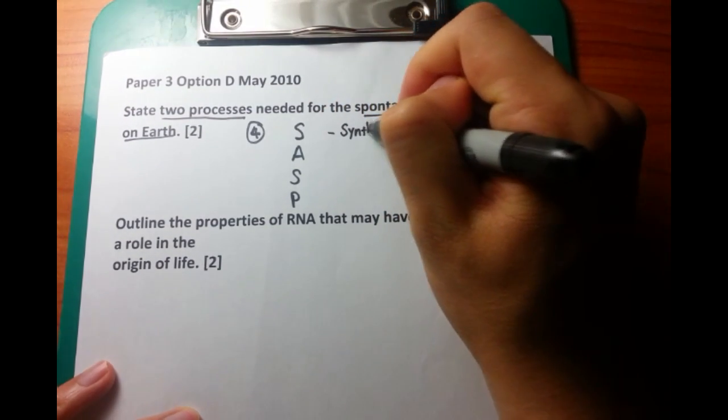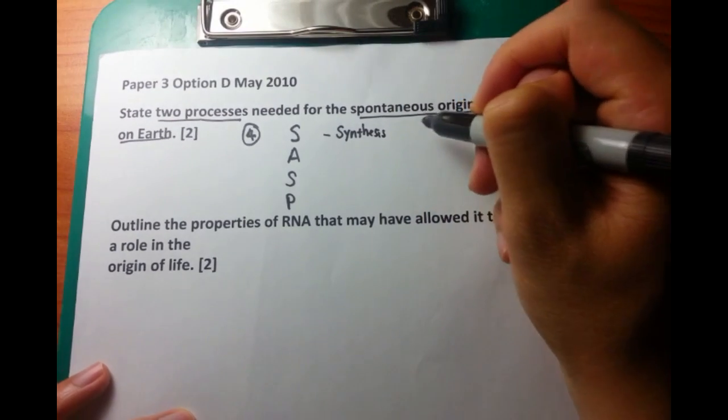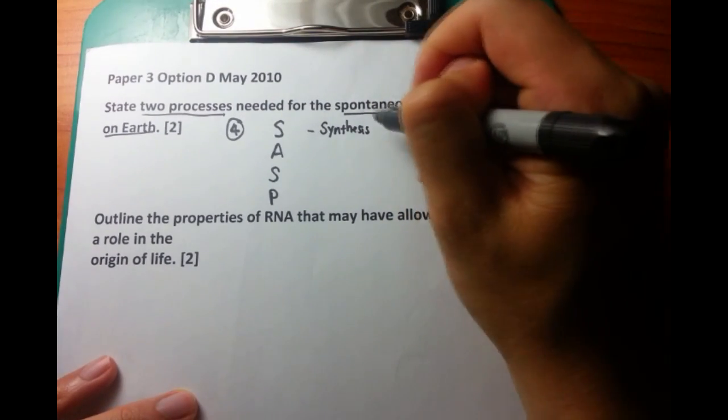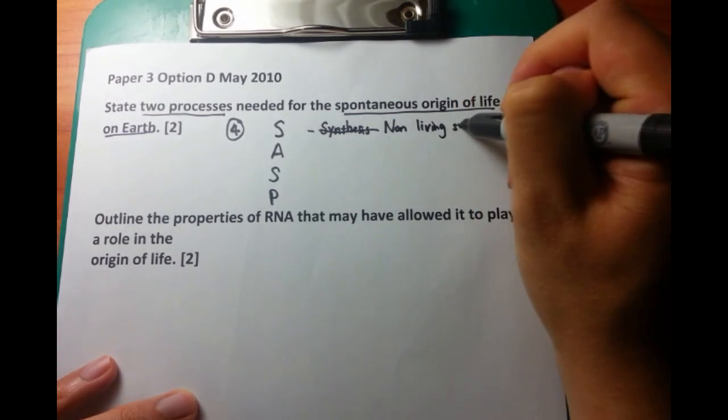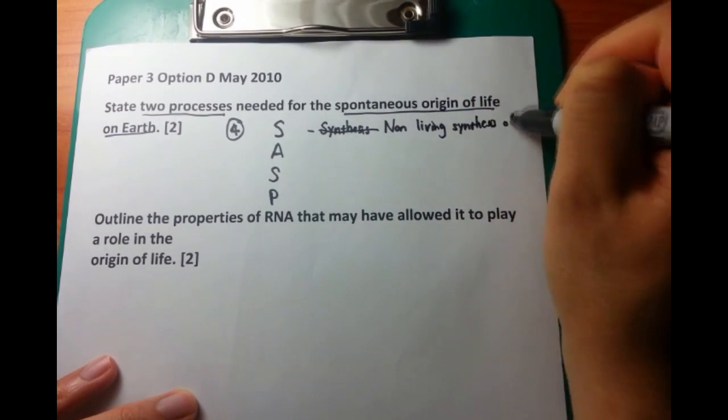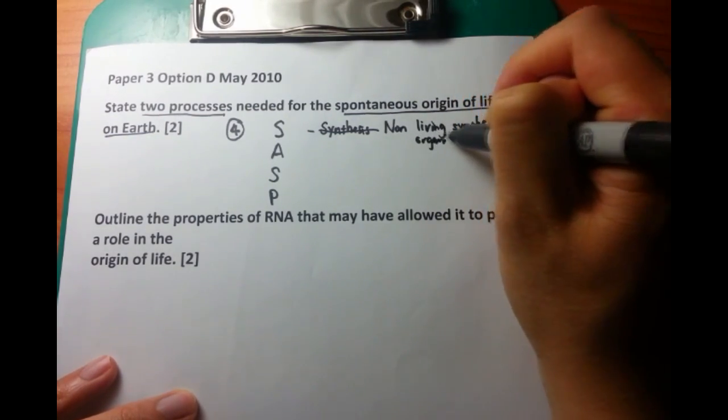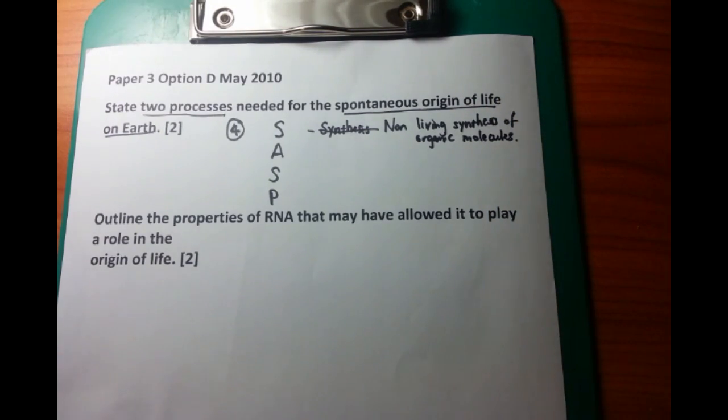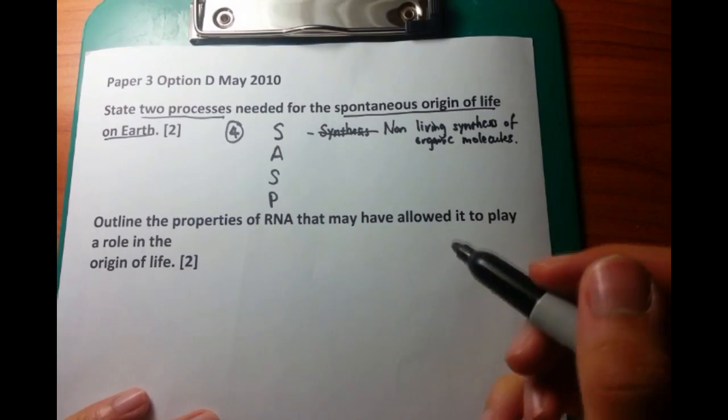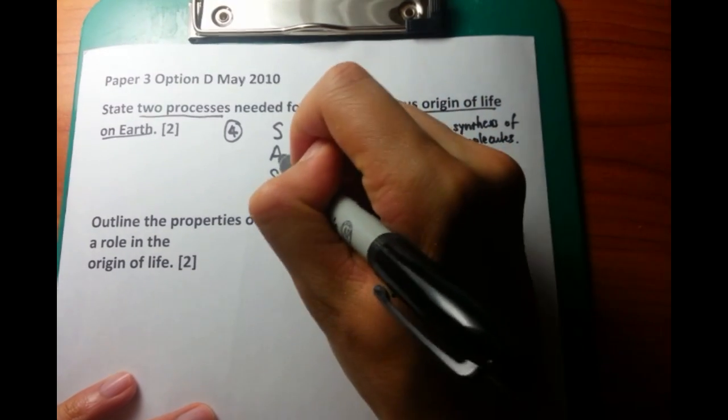I've got my little acronym which is SASP, and the first one is S. So this is the synthesis, or the non-living synthesis of organic molecules. You need to have a way of turning carbon, oxygen, hydrogen, which aren't intrinsically living within itself. You need to turn that, or a combination of those particular elements, into something which is living.